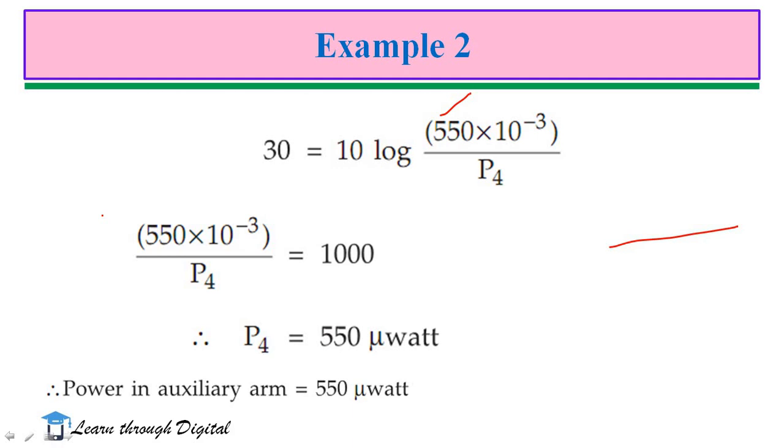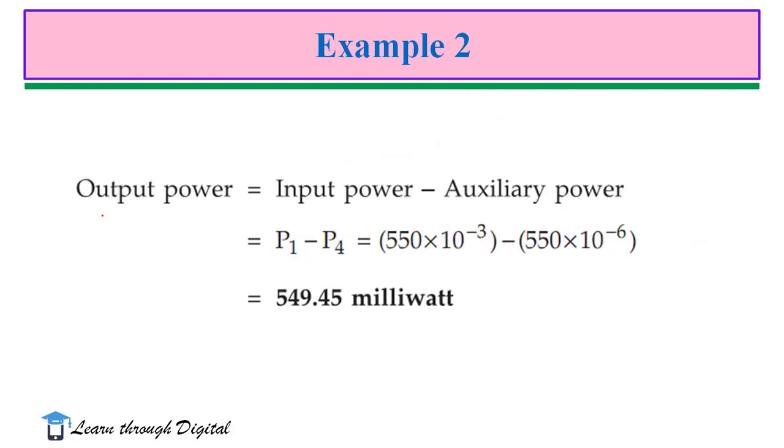The question is, we have to find the power in the main arm also. So, how we find that, the output power is equal to input power minus auxiliary power. So, therefore,